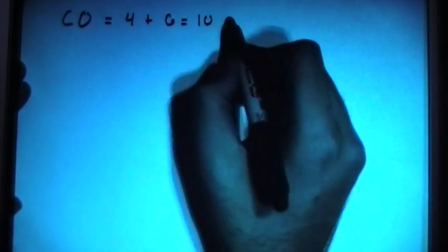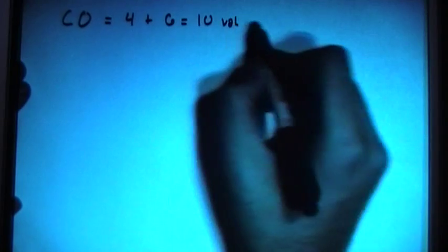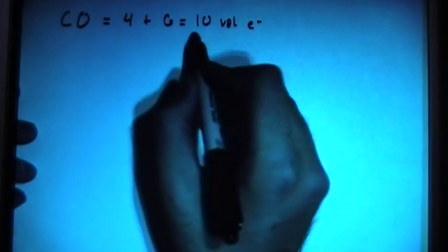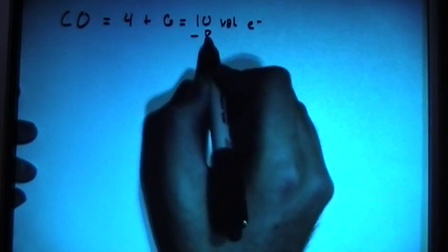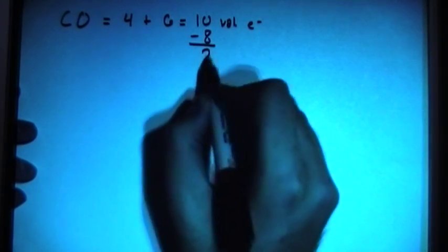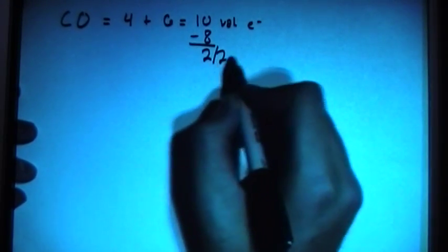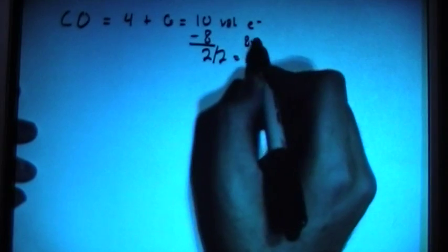So that's going to give us a total of 10 valence electrons. So now we can treat carbon as the center atom. So subtract 8 here, and it's going to give us 2 left over. Divide that by 2 gives us 1, and this is 8 times 1.